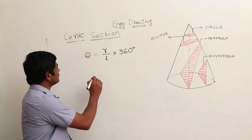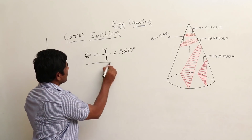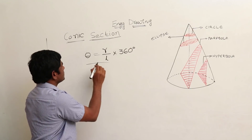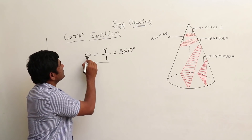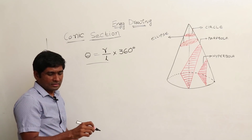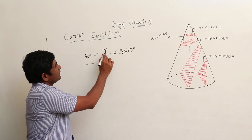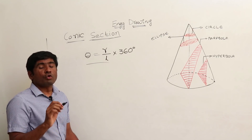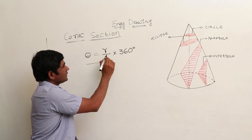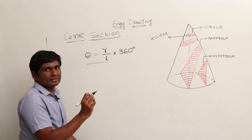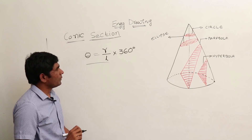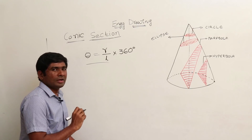We reduced the formula theta equal to r by l into 360 degrees. Here theta is the angle in the sector, r is the cone base radius, and l is the lateral surface length.